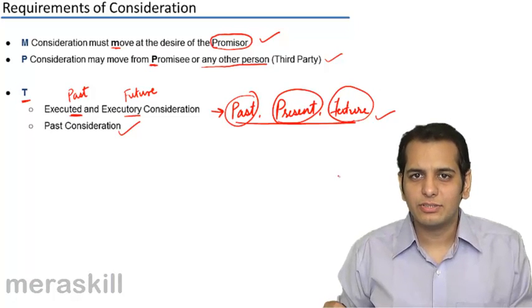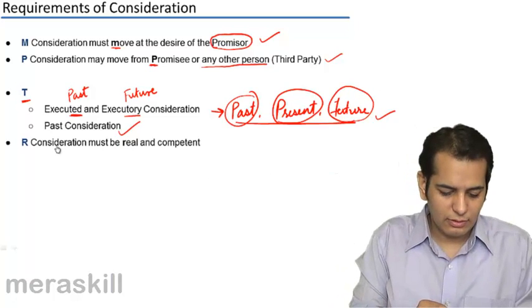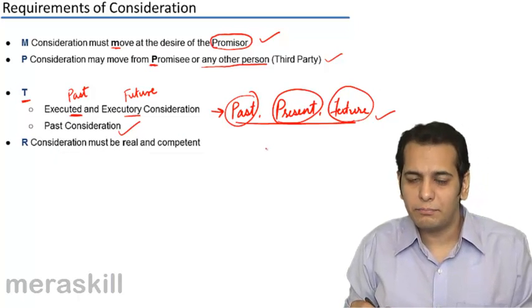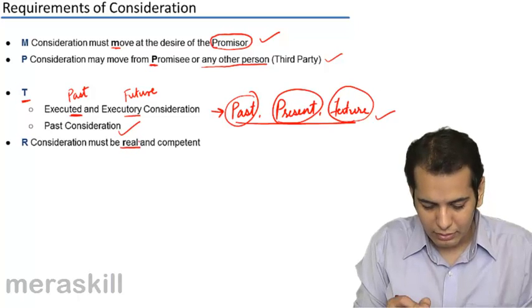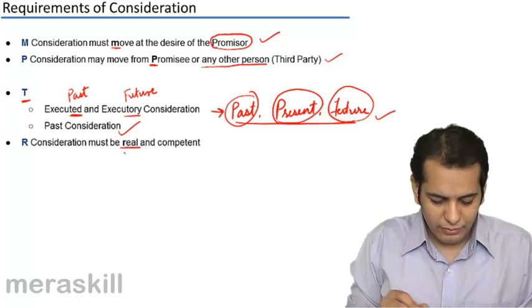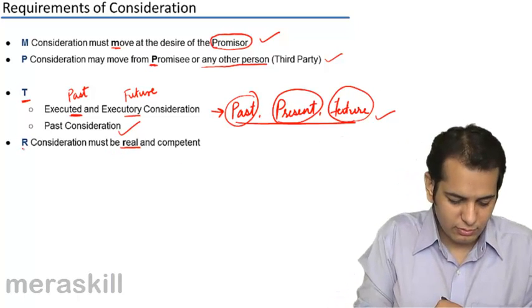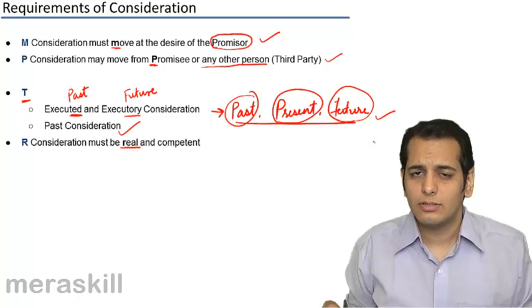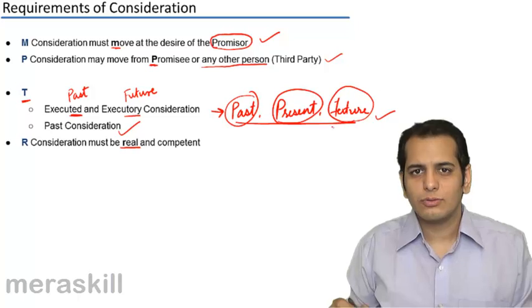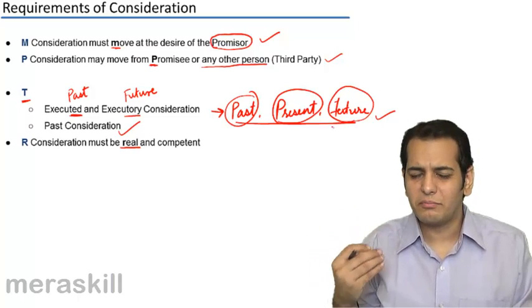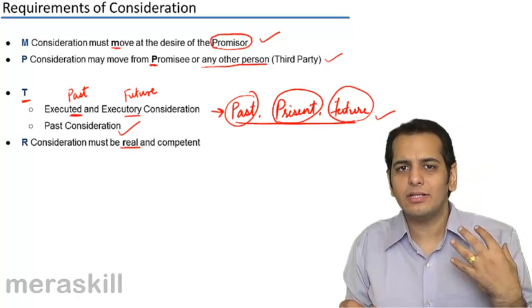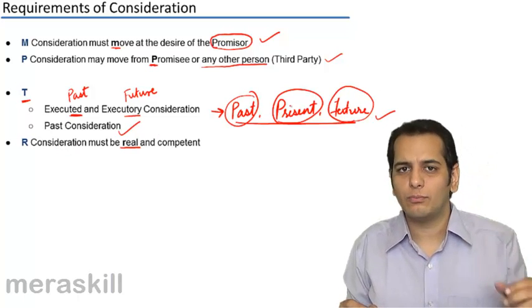The next essential for consideration is consideration must be real and competent. We have given the mnemonic R for this line or this requirement from the word real so that you can understand it or remember it more effectively. Now consideration must be real and competent. What does it mean?